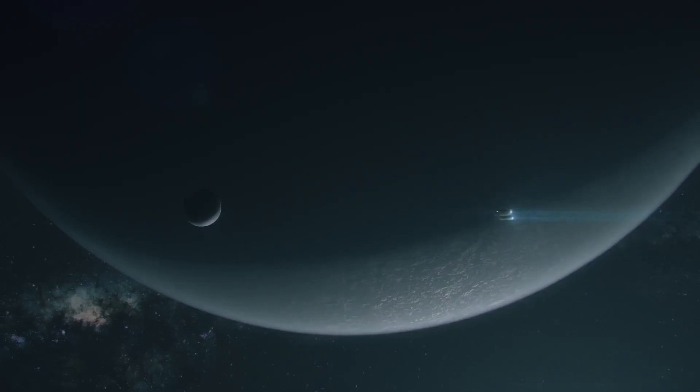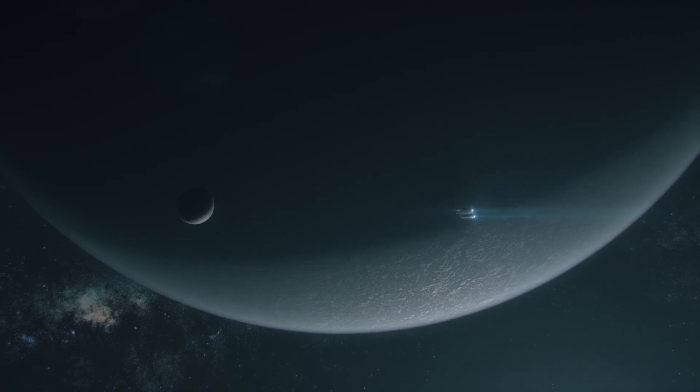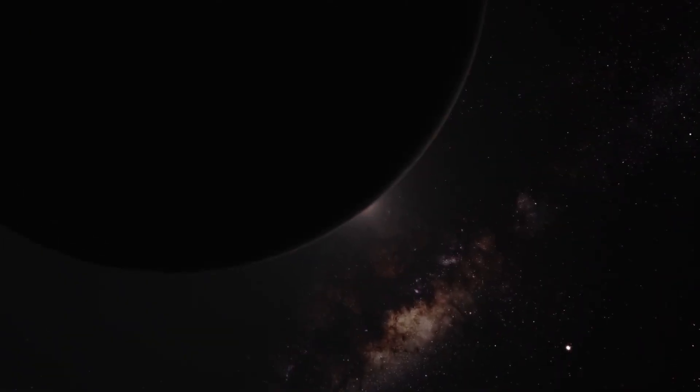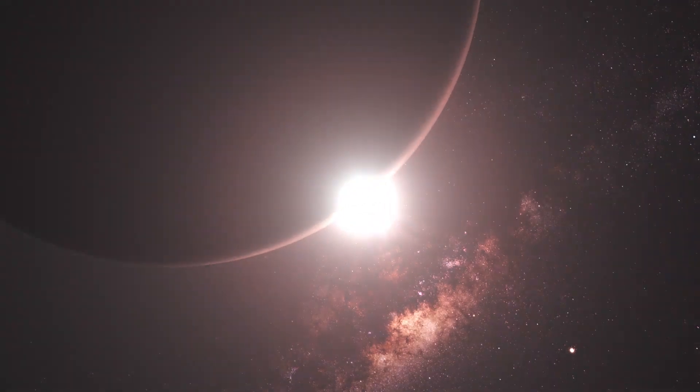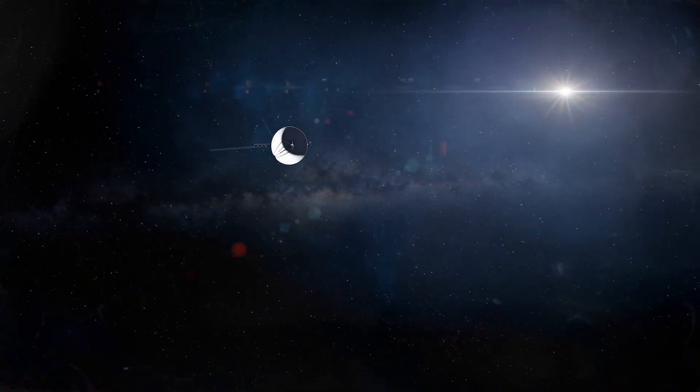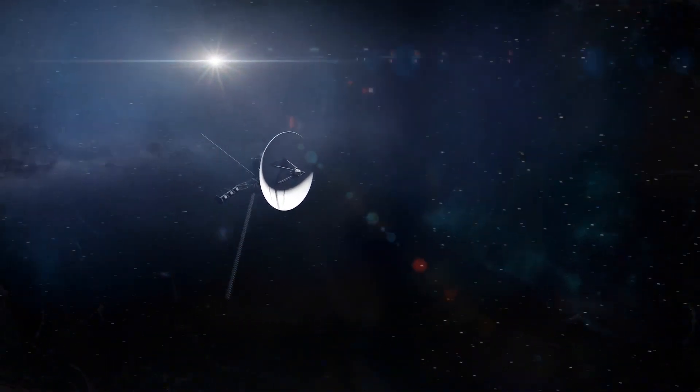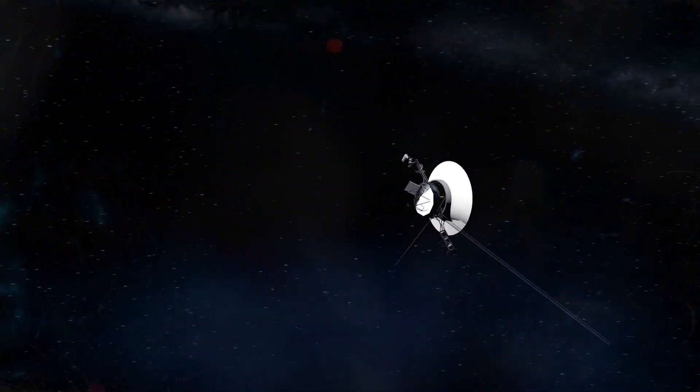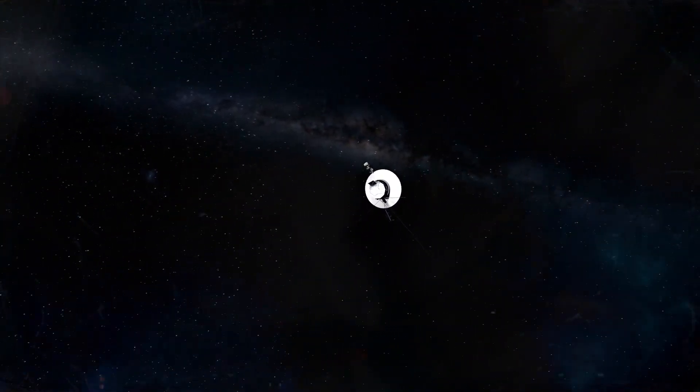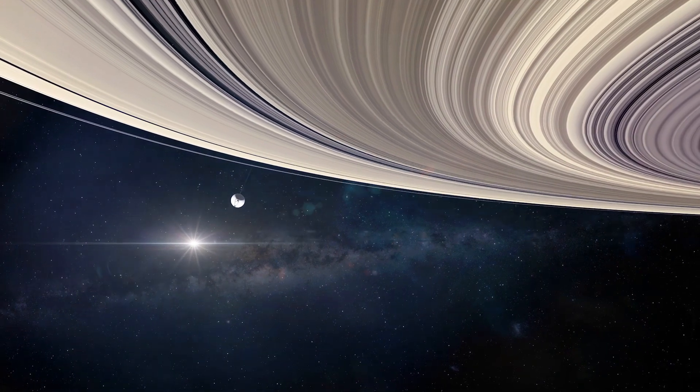The main problem is distance. Despite Proxima Centauri being the closest star to our solar system, it would still take tens of thousands of years to get there. After all, Voyager 1's space probe took about 44 years just to leave our solar system. And that's just a tiny step compared to the actual distance to the nearest star.